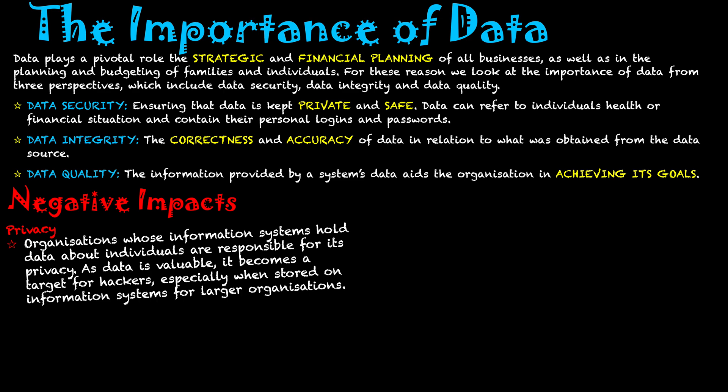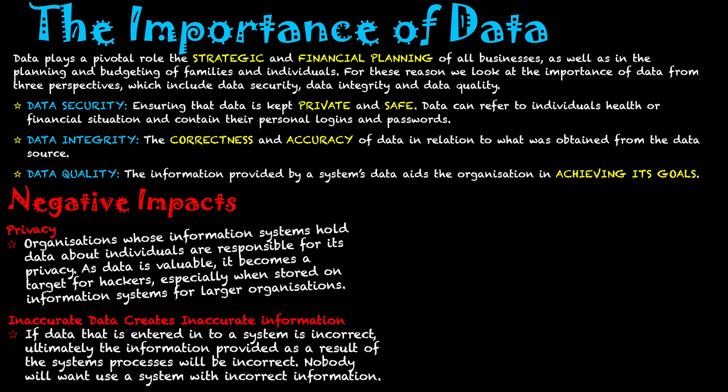Privacy is the bullseye — that is the target. People are going for these systems because they know they've got crucial data on them. Secondly, inaccurate data creates inaccurate information, and this relates to the integrity and quality side of things. If data entered into a system is incorrect, ultimately the information that comes as a result of the system's processing will come out incorrect. So nobody will want to use a system that gives incorrect information. We need to make sure that we are putting data into a system correctly, that when it goes in it is accurate, and it stays that way so that it can produce quality data out of the system.